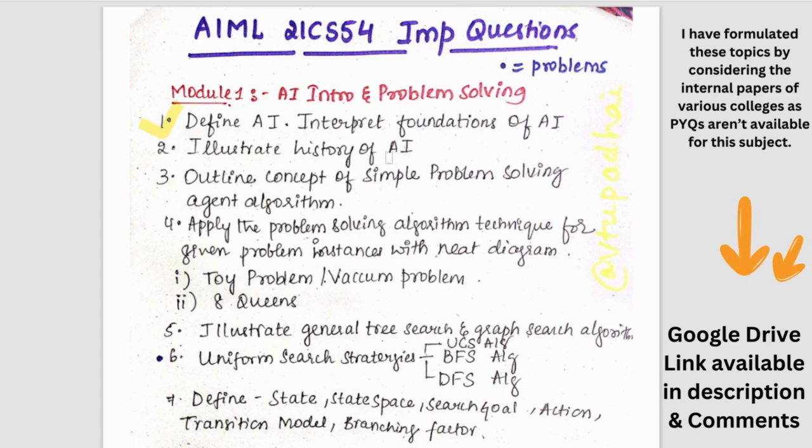Then we have history of AI which is not that important. And then coming to the concept of simple problem solving agent algorithm. Along with this algorithm they will give one of these problems - it could be the vacuum cleaner problem or n queens problem or 8 puzzle problem. So out of those three, one could be asked.